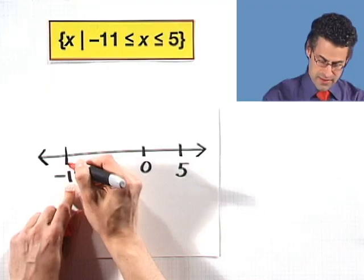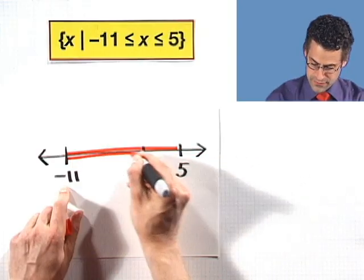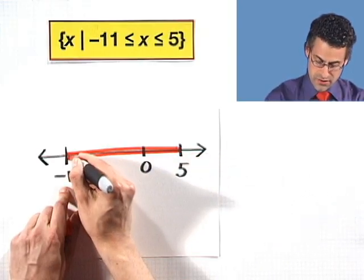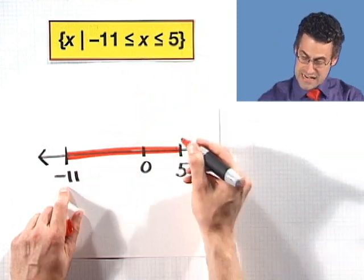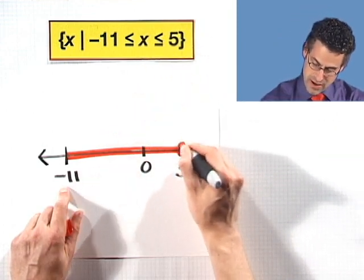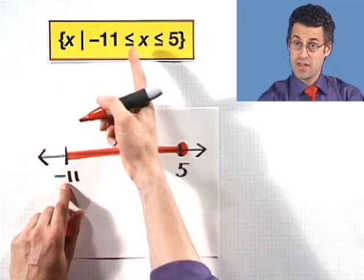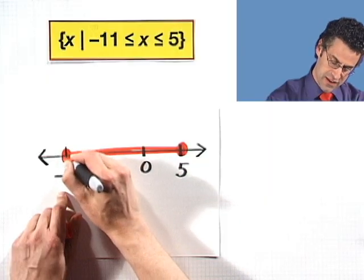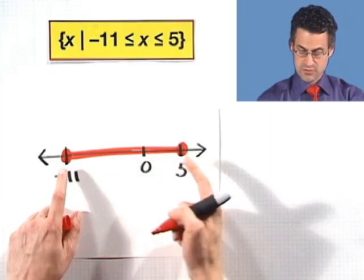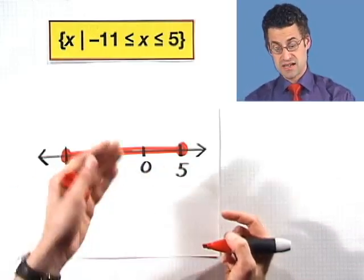We're talking about between negative 11 and 5, but which do we include in terms of the endpoints? Well, we actually include 5 because we have x less than or equal to 5, so we color in 5. And what about negative 11? Well, we have that x is always greater than or equal to negative 11. So negative 11 is one of the candidates we can have in our set, and so we color both endpoints in.